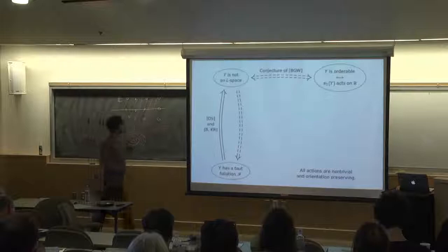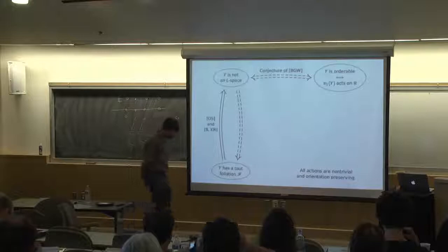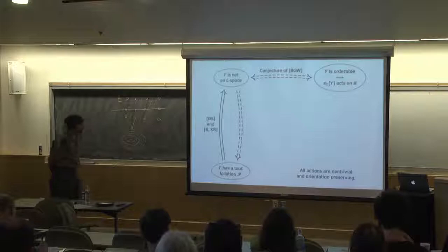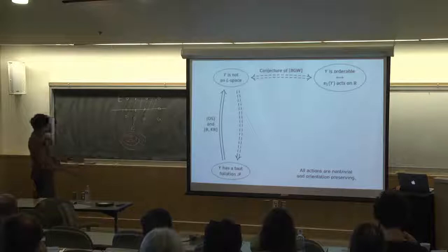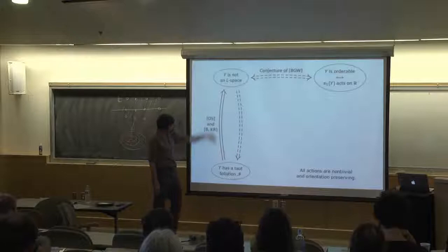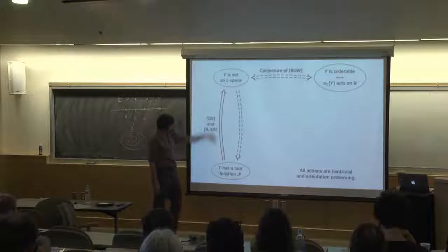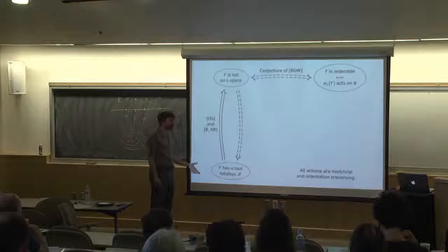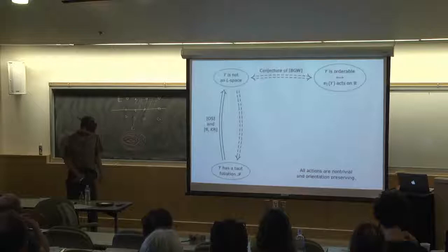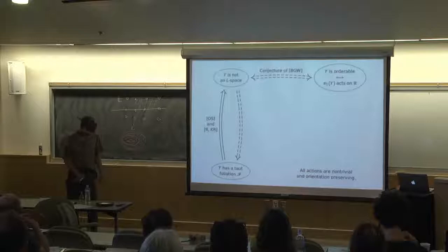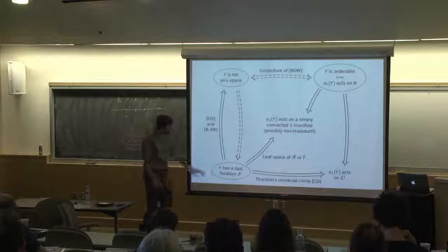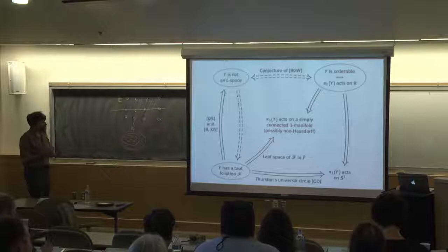These two things — not being an L-space and being orderable — were conjectured to be equivalent by Boyer, Gordon, and Watson. In terms of what we know: A implies B, B implies A — we have one direction between them. But what's this thing about taut foliations doing over here? It turns out that having a taut foliation doesn't seemingly give you an action on R directly. It does give you actions on other one-dimensional things.